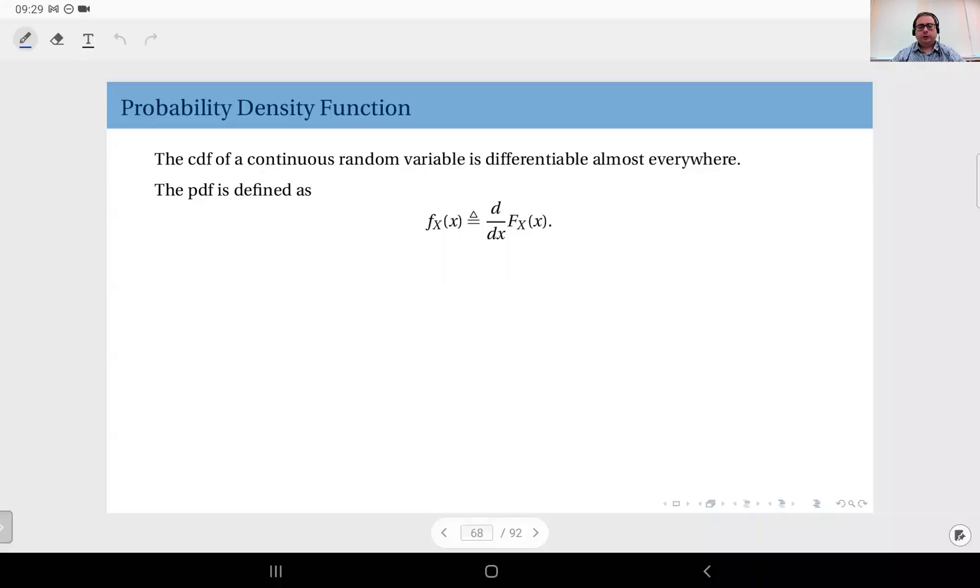Okay, next we will look at the third function that we use to describe random variables, which is the probability density function, in short the PDF. The PDF is defined as the derivative of the CDF, as given here.